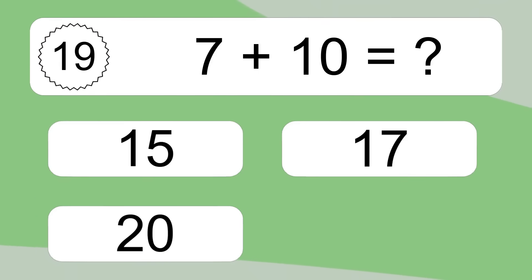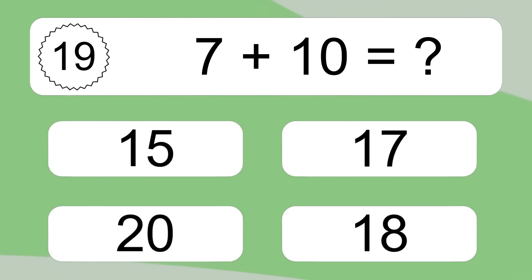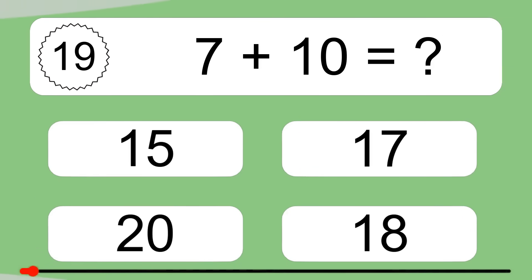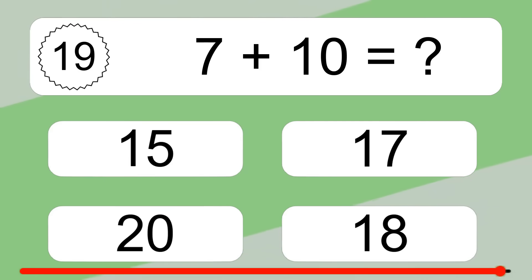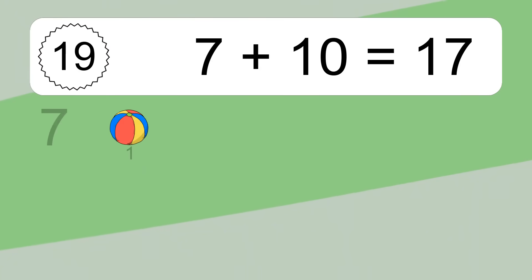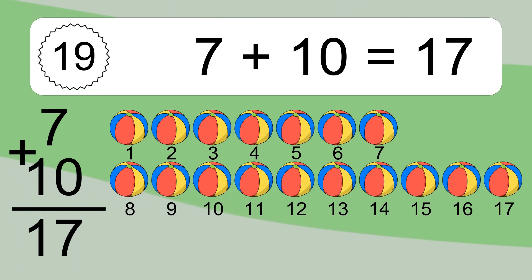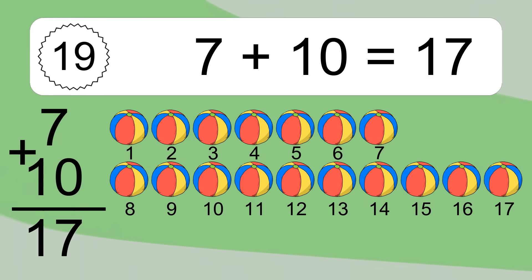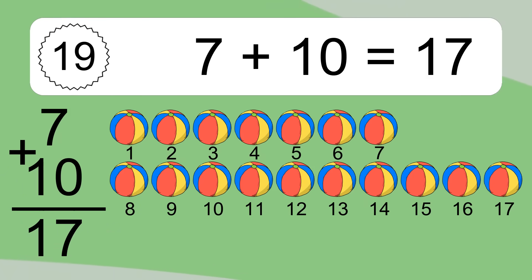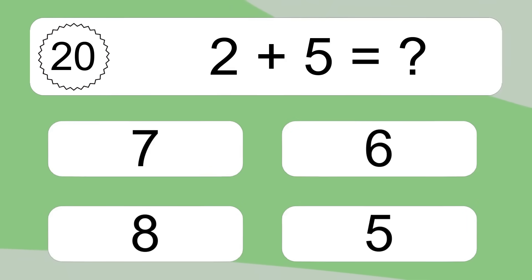7 plus 10 equals what? 7 plus 10 equals 17. Let's count it. 1, 2, 3, 4, 5, 6, 7, 8, 9, 10, 11, 12, 13, 14, 15, 16, 17.